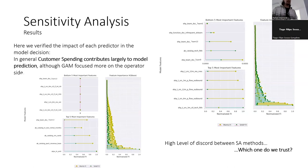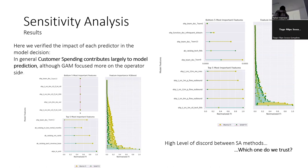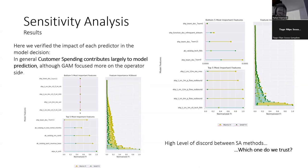When we do the sensitivity analysis using both the Morris method and the SHAP method, we observe something important: there is a level of discord between the two methods. For a particular model, one method says a specific variable is very important in predictions, while SHAP says it is rather unimportant. When we have disagreeing explanations, which one do we trust? Taking an average doesn't seem like a correct scientific approach. So we need some way of quantifying how good an explanation is.